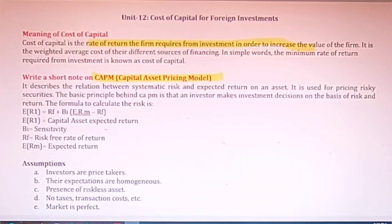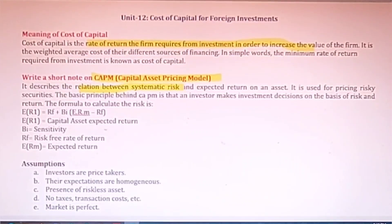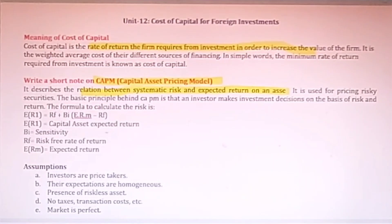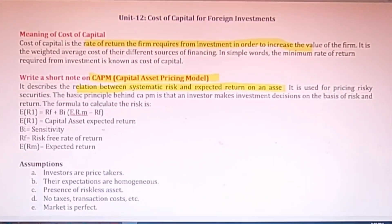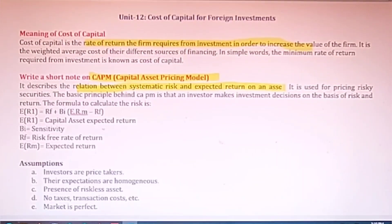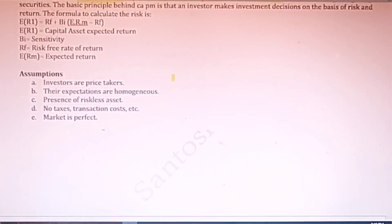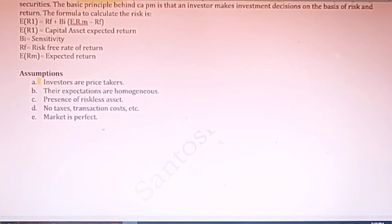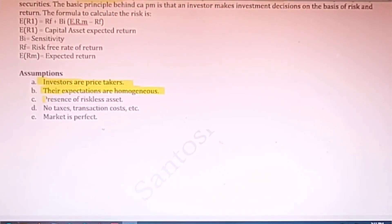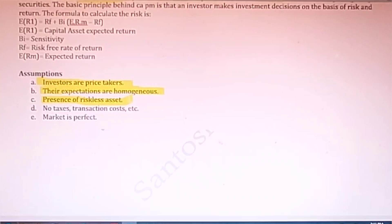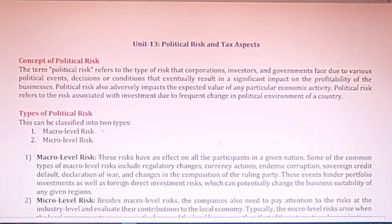The Capital Asset Pricing Model (CAPM) describes the relation between systematic risk and expected return. Every investment has certain risk and there is a return — more the risk, more are the chances of return. You should look at these assumptions considered in CAPM: investors are price takers (they accept prices, they do not fix prices); their expectations are homogeneous; there is a presence of riskless asset; there are no transaction costs or taxes; and the market is perfectly competitive.